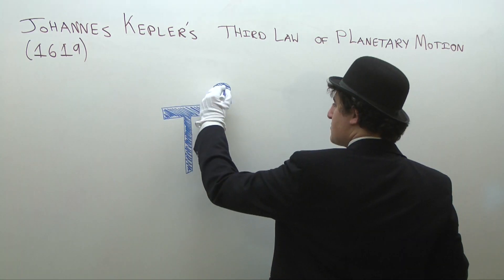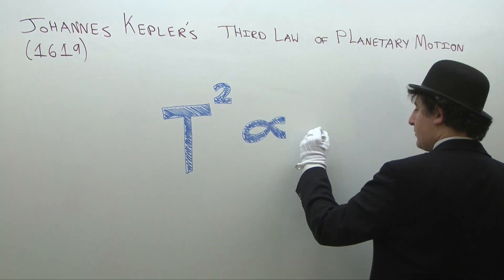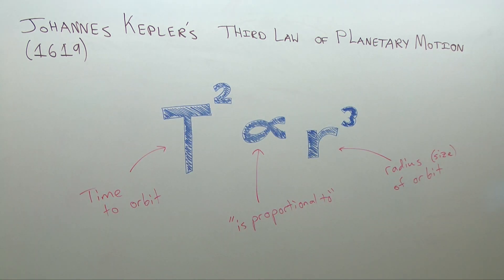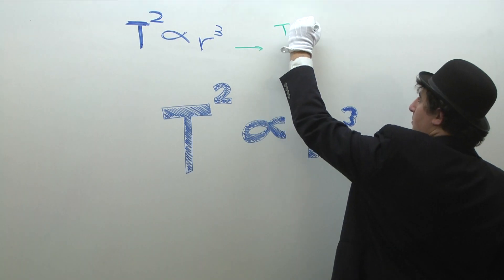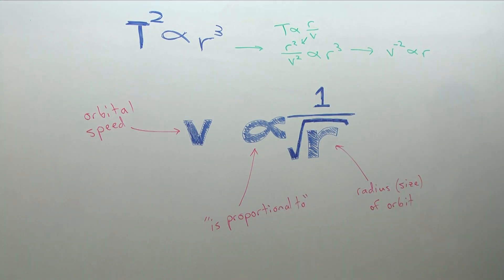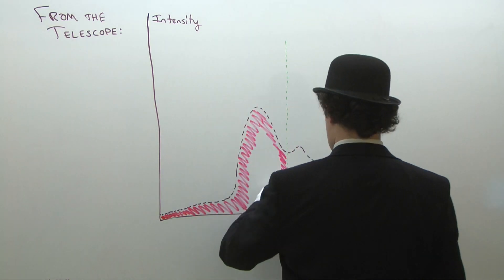Kepler's third law states that there is a relationship between the time it takes an object to complete its orbit and how big its orbit is. If you rearrange the math a bit, you end up with this relationship. We expect that the velocity of objects in orbit will be proportional to the inverse square root of the orbit's radius.